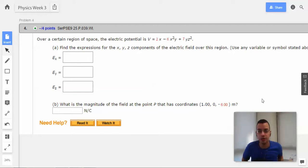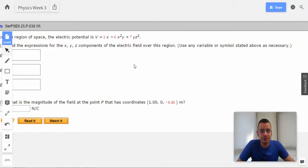Problem 4. Over a certain region of space, the electric potential is V equals 2x minus 6x squared y plus 7yz squared. Find the expression for the x, y, and z components of the electric field over this region. Use any variable stated above.